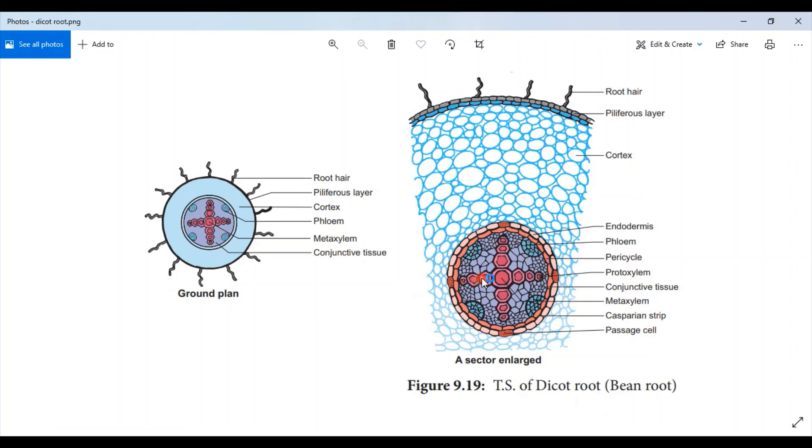Next is pith. Pith is usually absent in dicot roots.